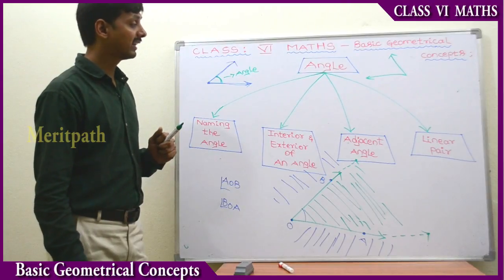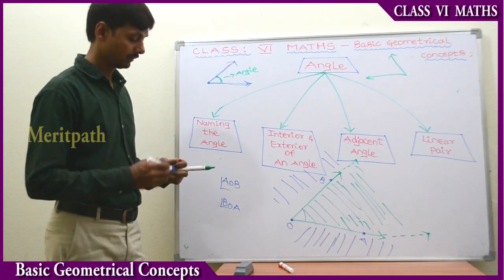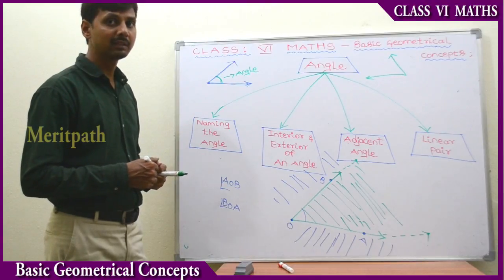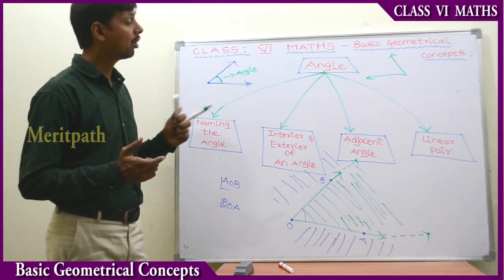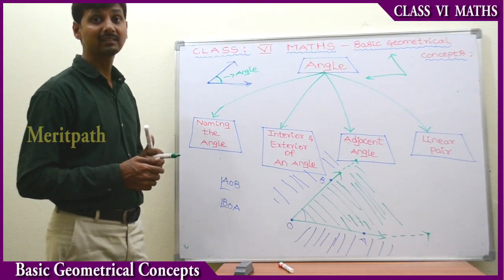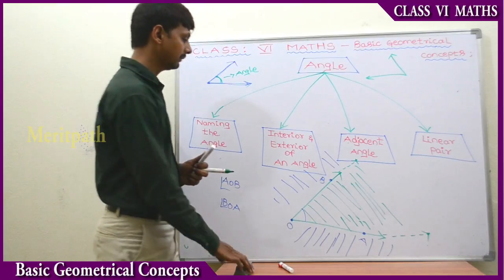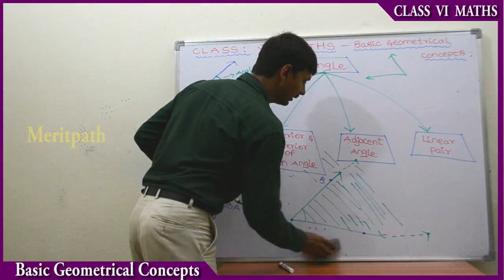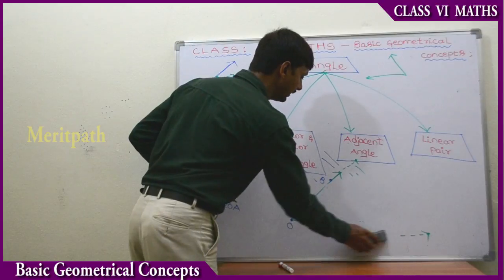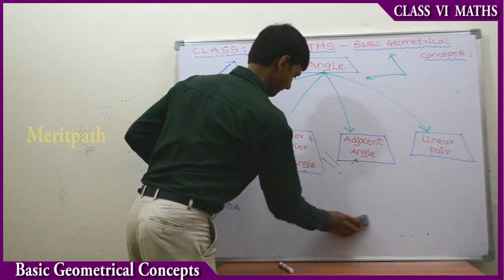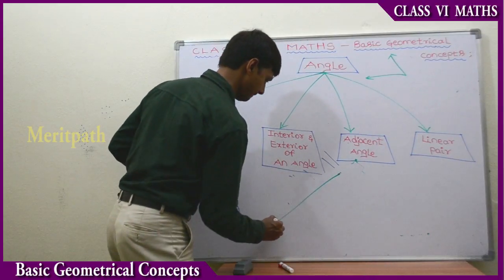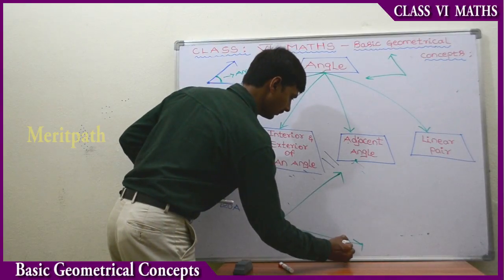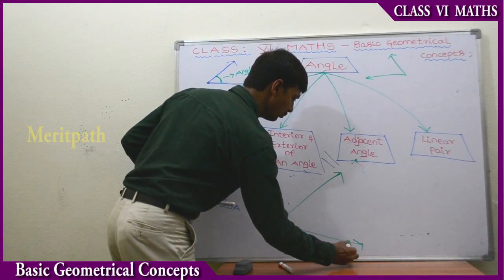Let's go to the next part — adjacent angles. Two angles that have a common vertex and a common arm we call adjacent angles. For example, we have drawn one of the angles here — angle AOB.